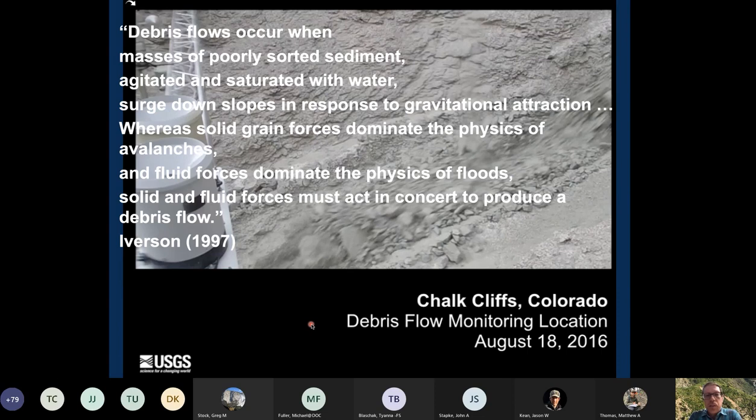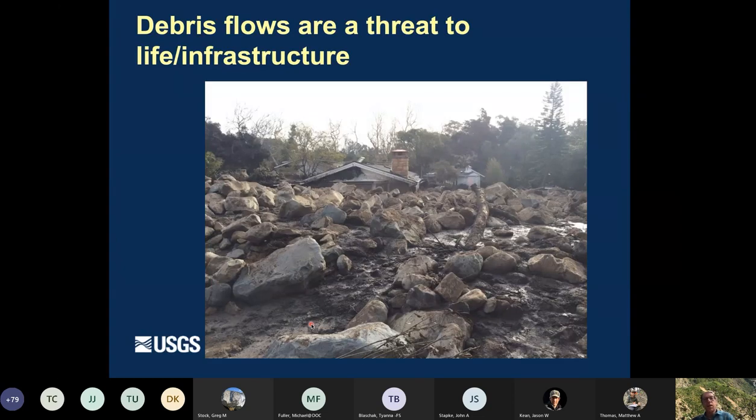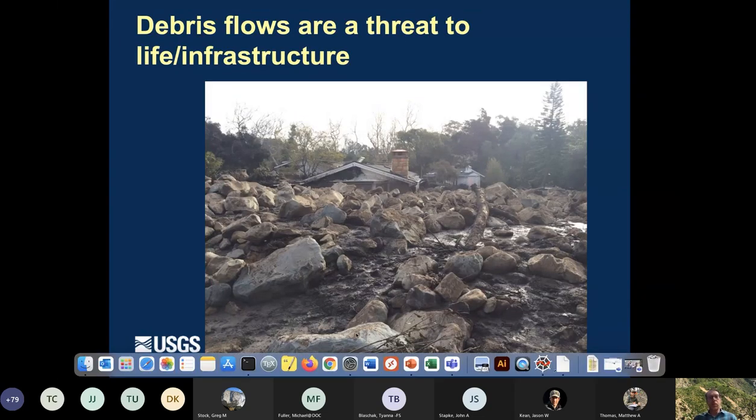So debris flows are this sort of special animal that lives at the intersection between fluidized flow and granular flow. And one of the reasons that people care a lot about debris flows is they are really destructive. So as you can see in this photo, there's a debris flow in Montecito, California that is basically up to the eaves on this house. So they're a real threat to life and infrastructure.